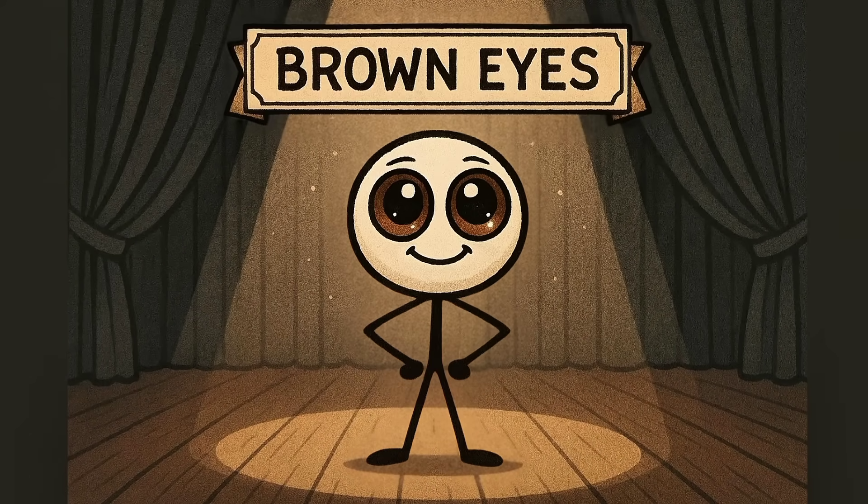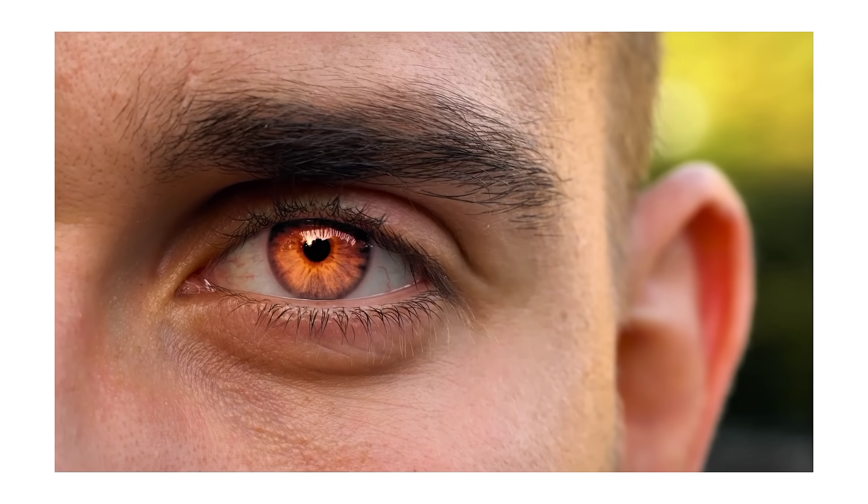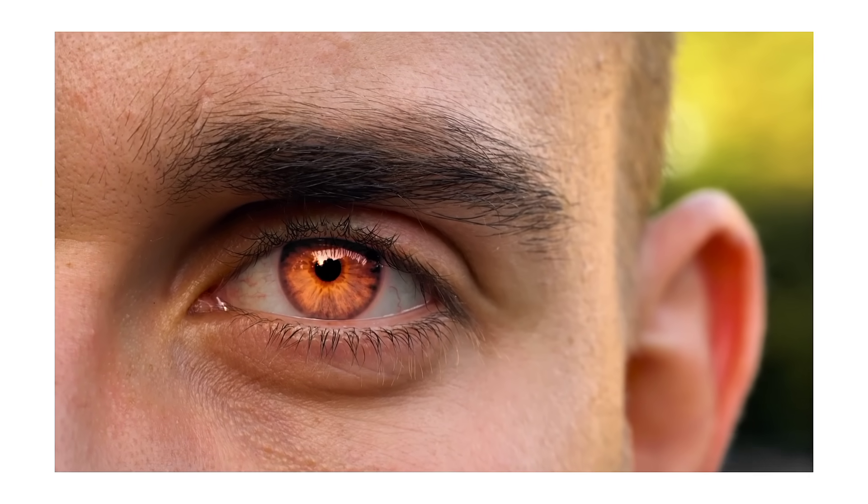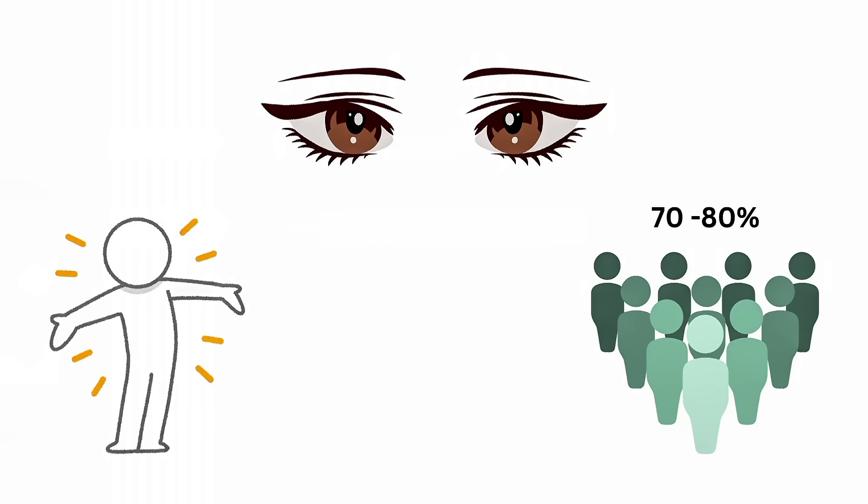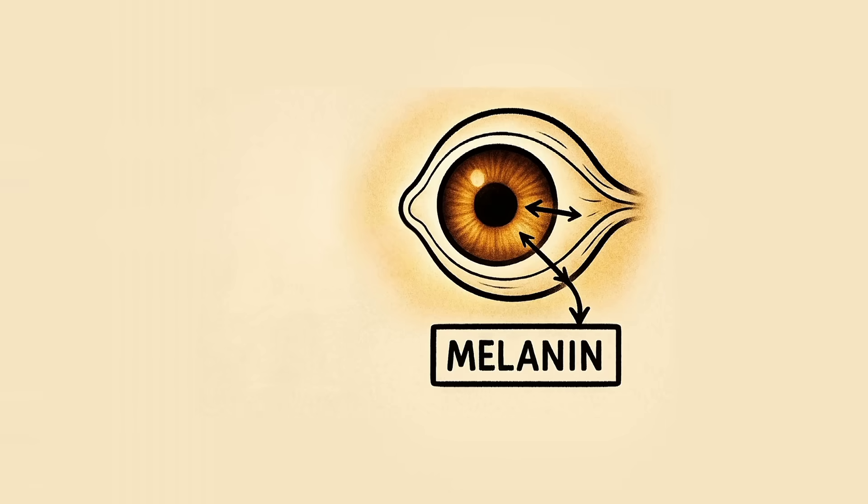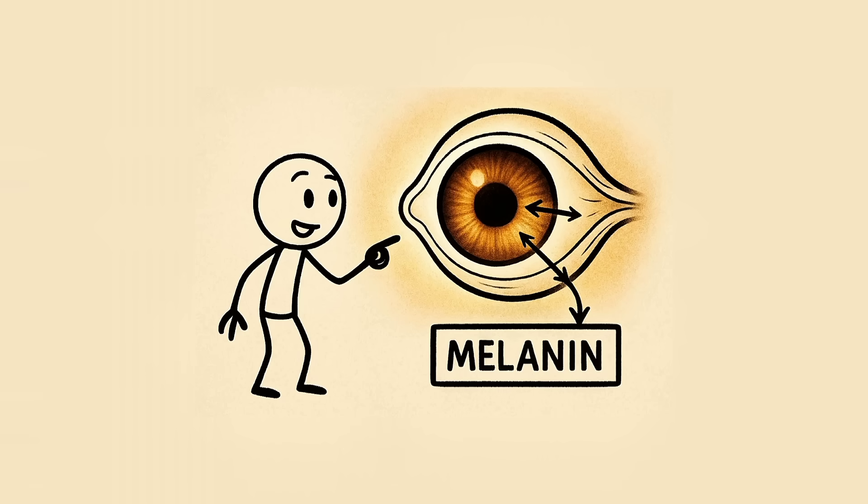One, brown eyes, the classic that rules the world. First up, brown eyes, the Beyonce of eye colors. Everywhere you look, boom, brown eyes. Around 70 to 80% of people on Earth have them. Fun fact, brown eyes aren't actually brown. They just look that way because of melanin. That's the pigment that decides how dark or light your eyes are. More melanin equals darker eyes.